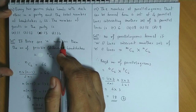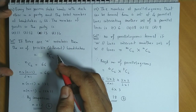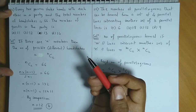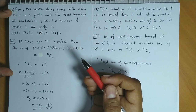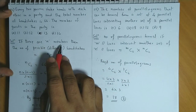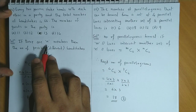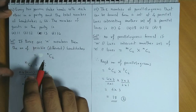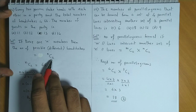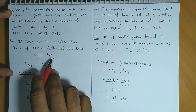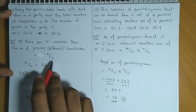For one particular handshake, two persons are required at a time. After selection, it results in one handshake. So if there are n members, the number of possible selections of two persons at a time would be nC2. So the number of possible selections, taking two persons for every handshake, would be nC2.